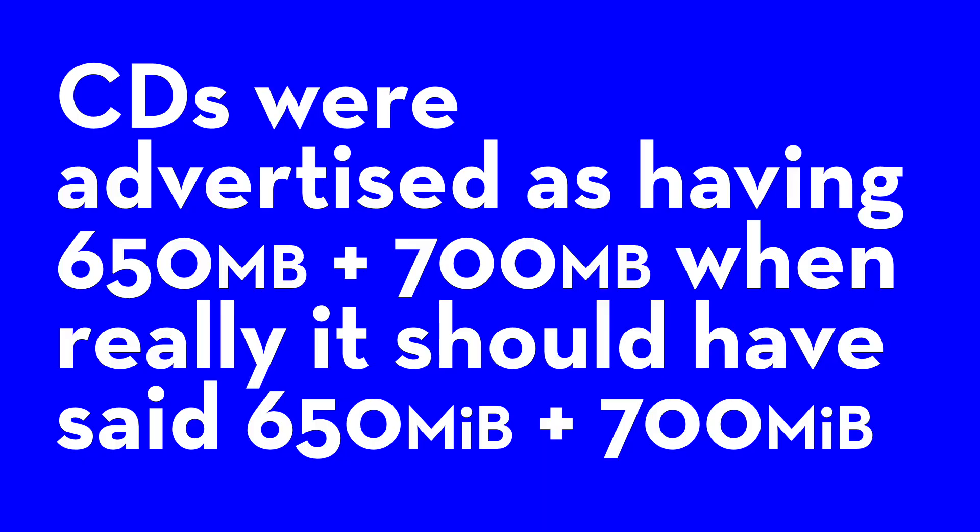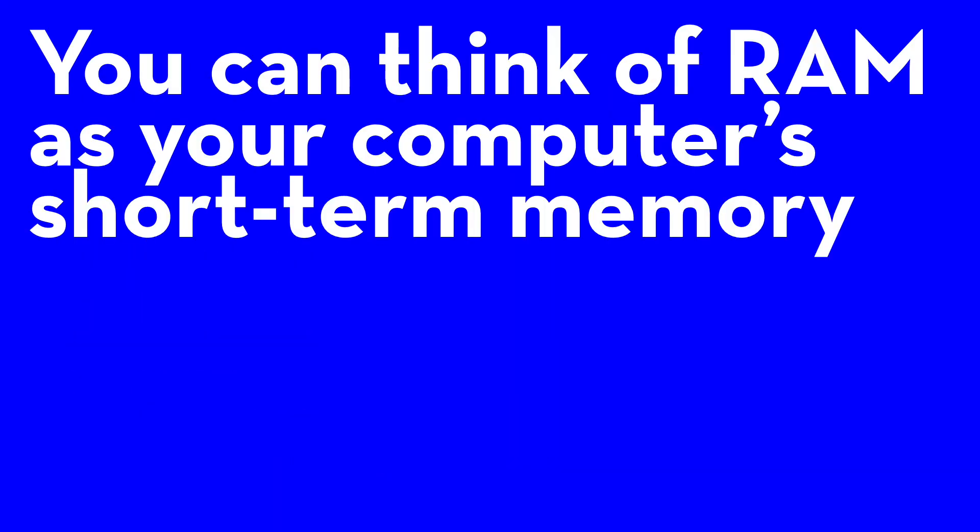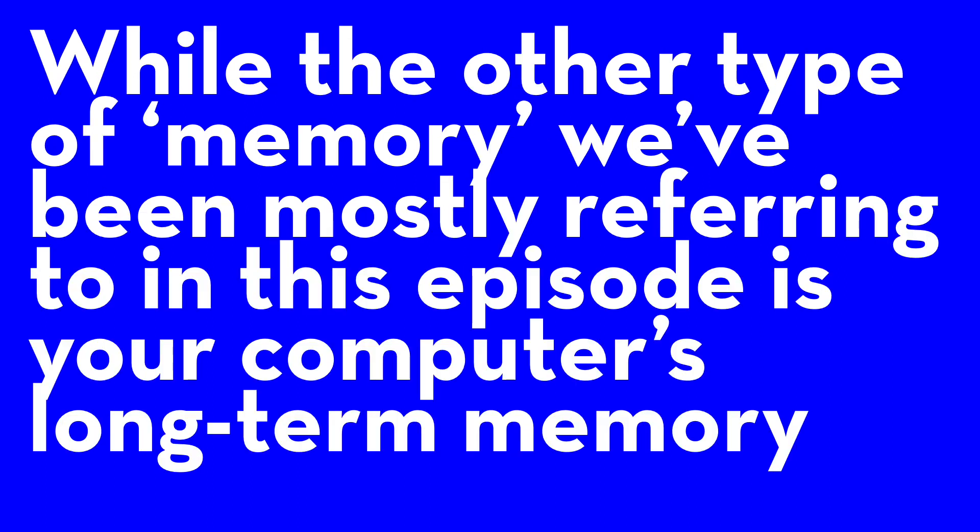For example, standard DVDs were advertised as having 4.7 gigabytes of memory when really they came in closer to 4.38. Weirdly, CDs actually advertised themselves as having the correct amount of space but ended up using the incorrect measurement. So a CD would state that it had 650 or 700 megabytes of space and it actually had that amount. We even see this same situation today with RAM. Unlike the sizes for disk drives, RAM sizes have to be specified in powers of 2, therefore 4 gigabytes of RAM is actually 4 gigabytes of RAM — yet it's still advertised as 4 gigabytes.